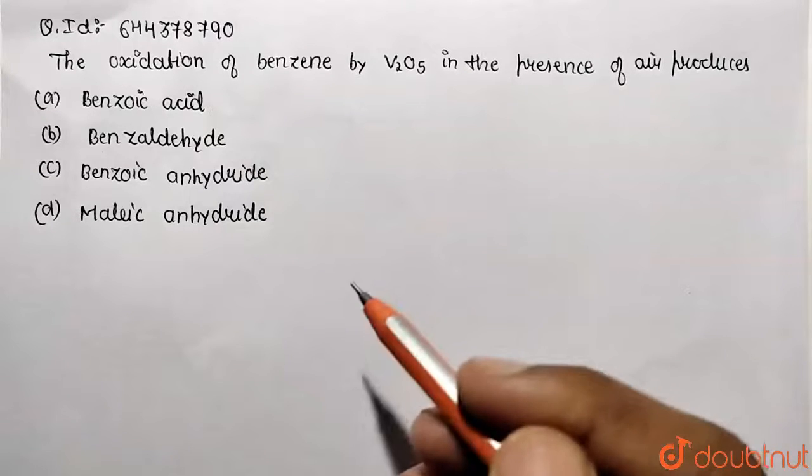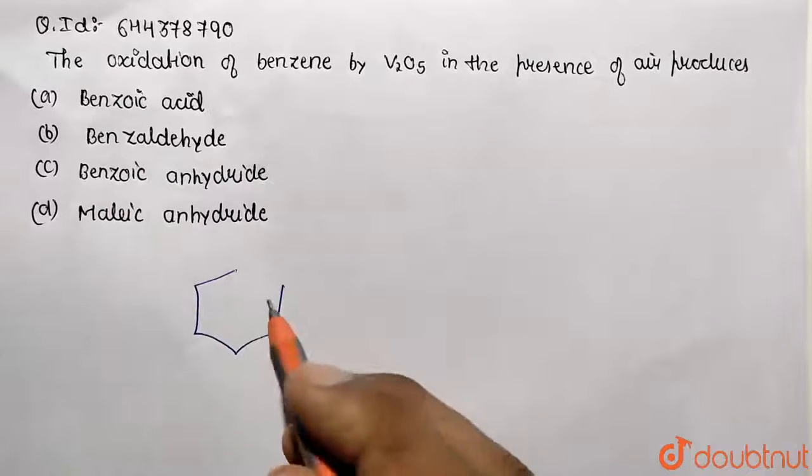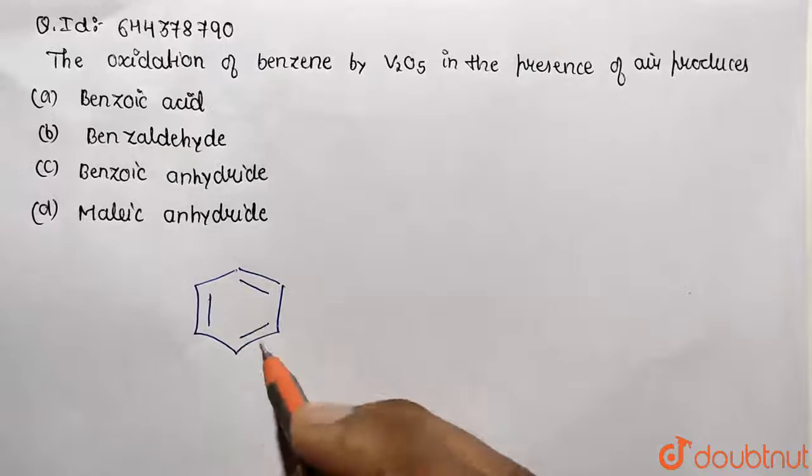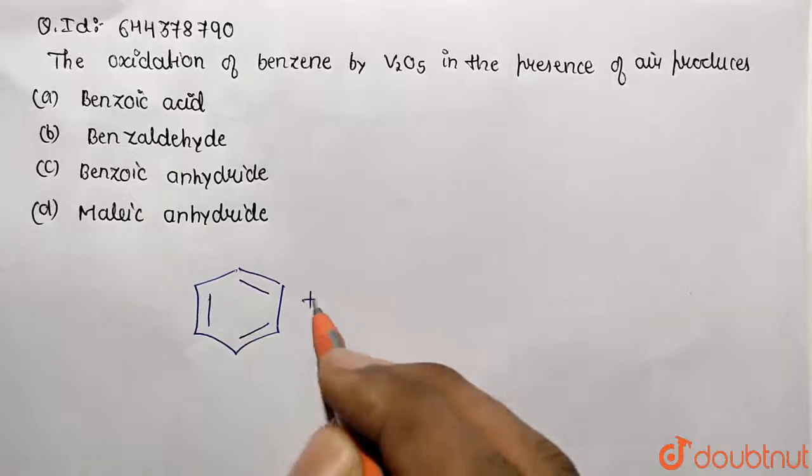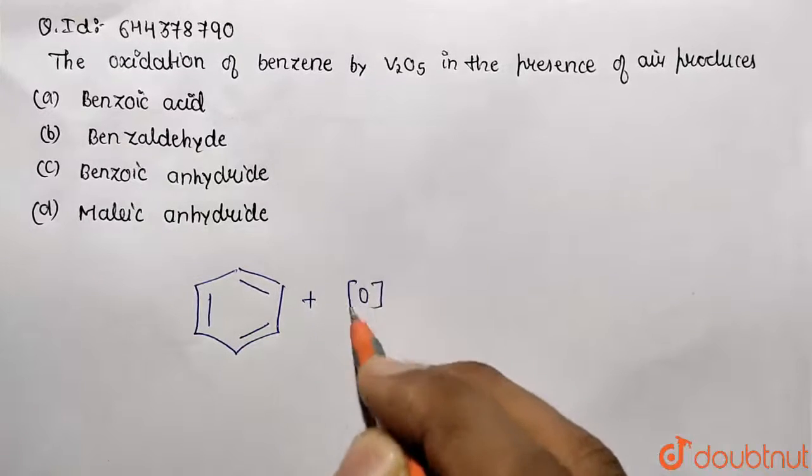So first of all, perform the oxidation reaction. We are having benzene, which is of the formula C6H6. So this is containing the double bonds, alternate double bonds. And when oxidation is being done, if I take oxygen for this representation.